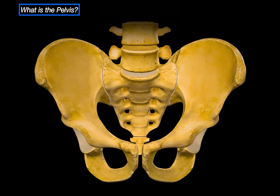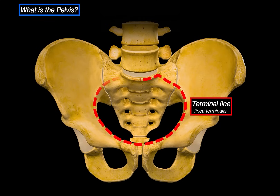There is an anatomical concept that helps us make sense of this area, and that is the linea terminalis, also known as the pelvic brim. This is a curved bony ridge that loops from the sacral promontory at the back, along the arcuate line of the ilium, down to the pecten pubis, and ends at the top of the pubic symphysis.